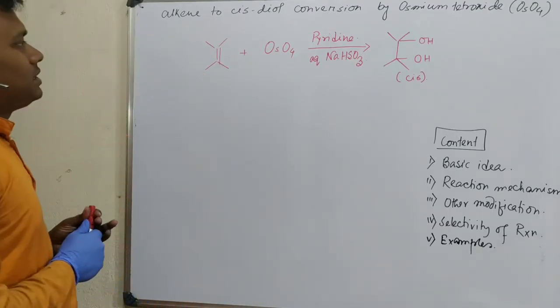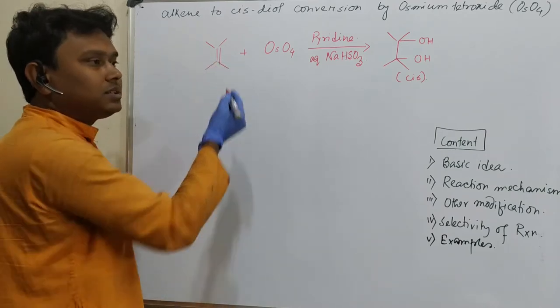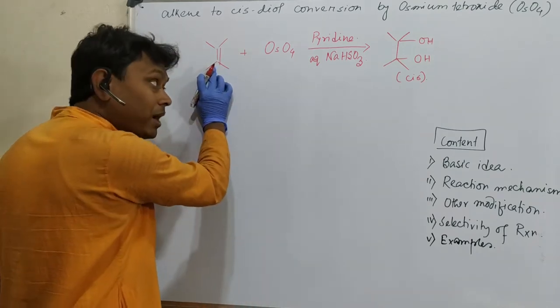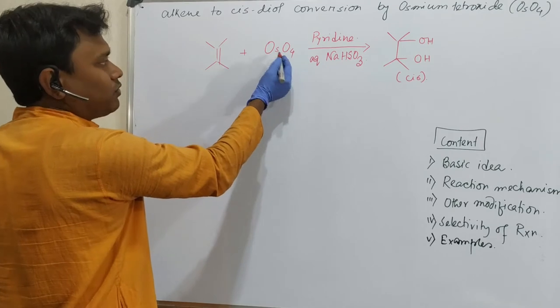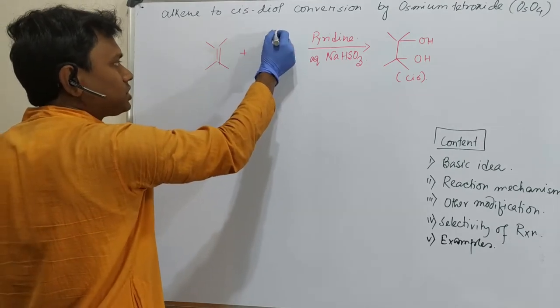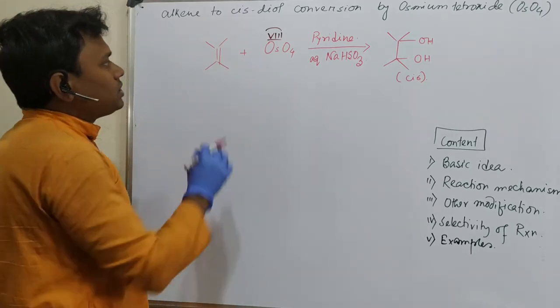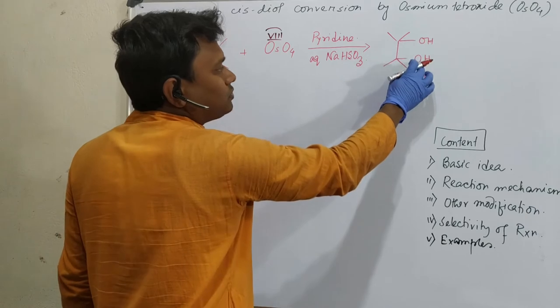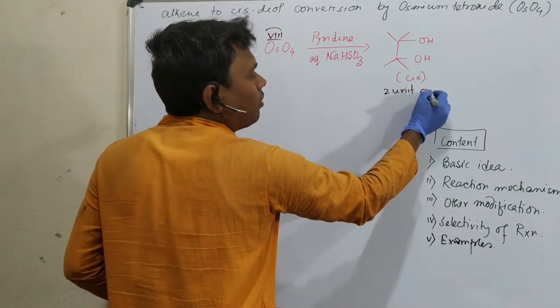As you can see, this is alkene C=C double bond and the pi bond is prone to oxidation compared to the sigma bond. So reaction happens on the pi bond. Its reaction is osmium tetroxide and what is the osmium oxidation state? This is a redox reaction. After reaction, see this is oxidation happens one unit, one unit, so two unit oxidation.